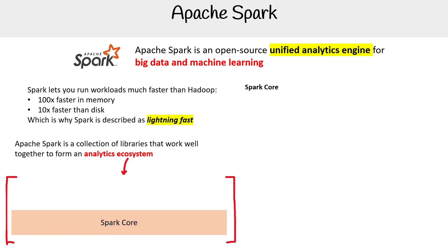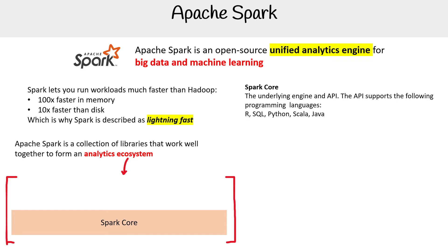We have the Spark Core, which is the underlying engine and API. The API supports the following programming languages: SQL, Python, Scala, and Java.